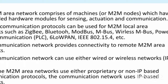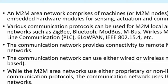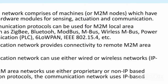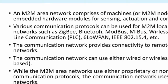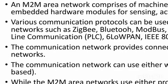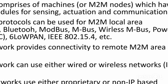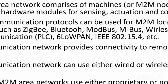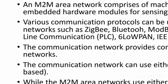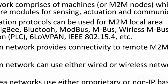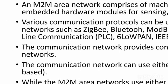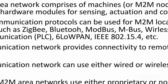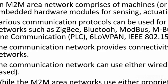In M2M, machines have hardware modules for sensing, actuation, and communication. Various communication protocols can be used for M2M local area networks, namely Zigbee, Bluetooth, Modbus, M-Bus, Wireless M-Bus, Powerline Communication, 6LoWPAN, and IEEE 802.15.4. The communication network provides connectivity to remote M2M area networks and can use either wired or wireless networks.